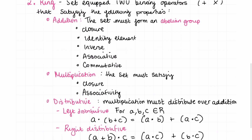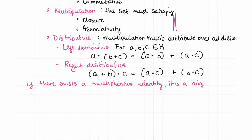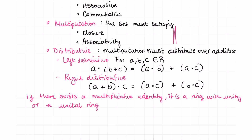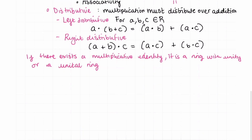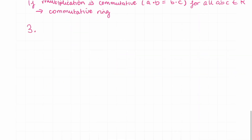Note that a ring does not necessarily need to have a multiplicative identity — that is not in the required set of properties. However, if a multiplicative identity does exist, the ring is often referred to as a ring with unity or a unital ring. Additionally, multiplication in a ring is not required to be commutative. If multiplication is commutative — meaning a·b equals b·a — the ring is called a commutative ring.